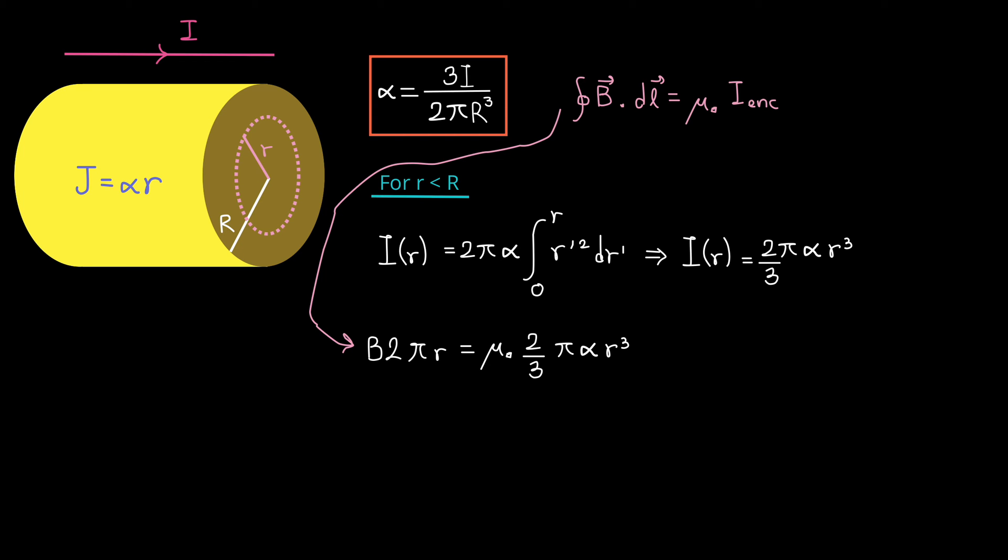And that is equal to mu zero times i enclosed, which is the current at a distance, lowercase r, from the center, which is what we found above. Now one more thing to do, let's substitute for alpha the expression that we found in the previous part of the problem, and rearrange to isolate the magnetic field B.